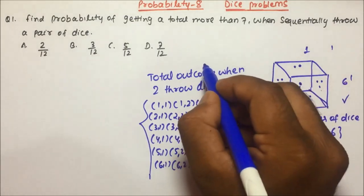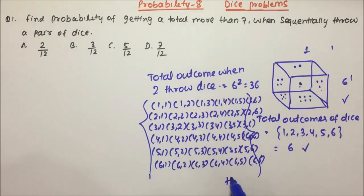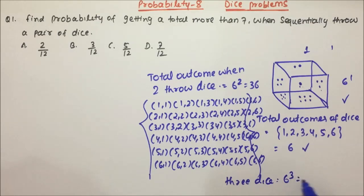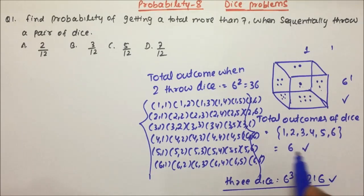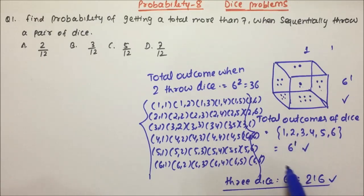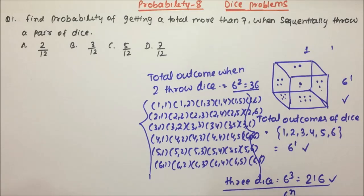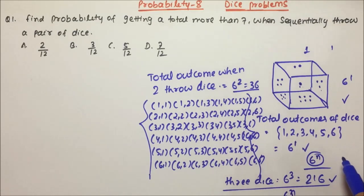When we throw 3 dice, the total outcomes will be 6 cubed, which is 216. So the pattern is: when we throw 1 dice it is 6 to the power 1, when we throw 2 dice it is 6 to the power 2, when we throw 3 dice it is 6 to the power 3, and when we throw N dice it will be 6 to the power N.